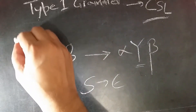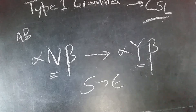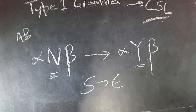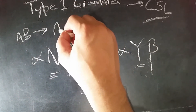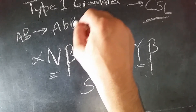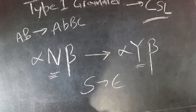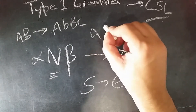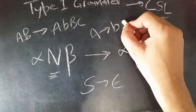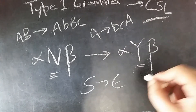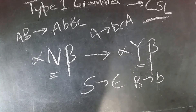An example of type 1 grammar: there are two non-terminals; this is a string of terminals and non-terminals where there must be at least one non-terminal, and it gives a string of terminals and non-terminals where one of the strings must be non-empty. Another example: a non-terminal gives two terminals and a non-terminal, or a non-terminal gives a terminal.